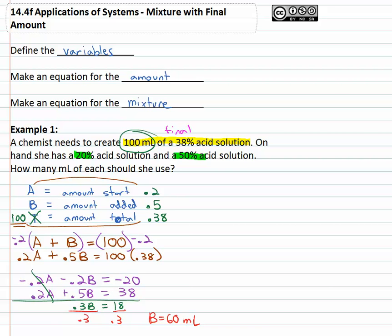Still need to find the other solution. We can find the other solution by going back to our original equation. We are told that A plus B equals a hundred. A plus B we just found out is sixty, has to equal a hundred. By subtracting sixty we can find out that A is equal to forty.